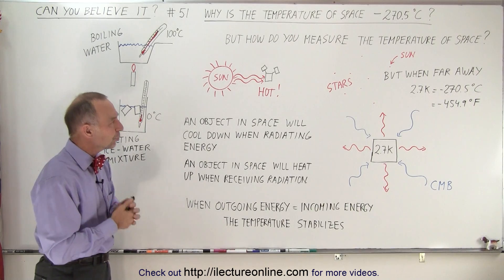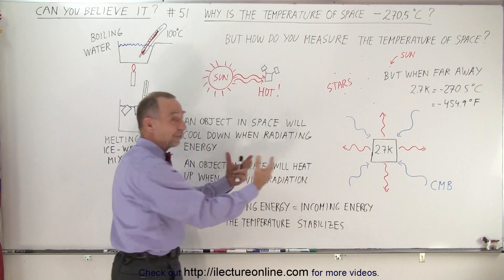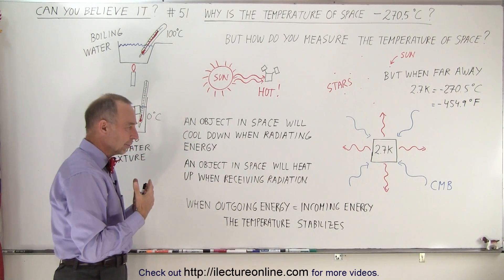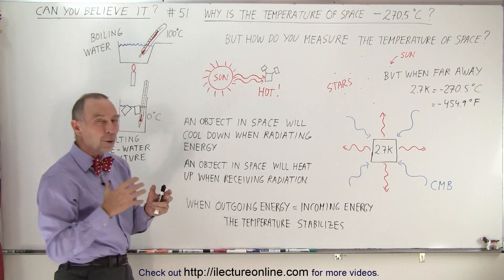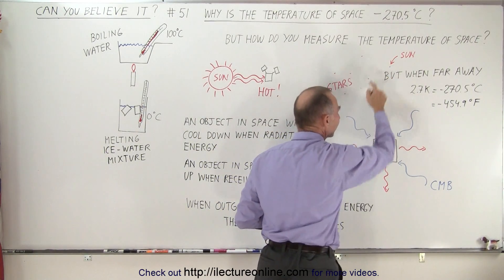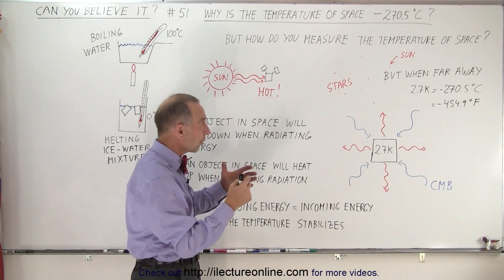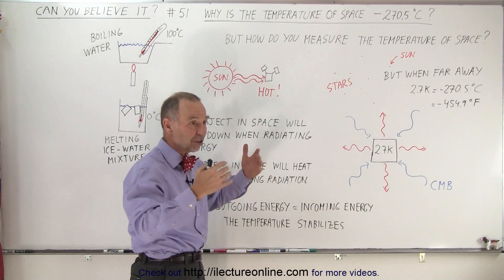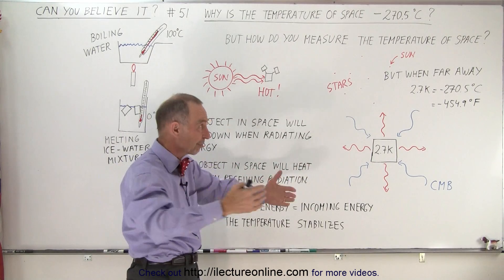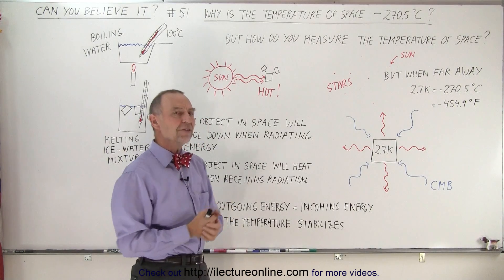We do know that if we get close to the sun or any star it will feel hot because we get the radiation from the sun. But if we go really far away where the sun is just a tiny little dot in the sky, just like another star, we're so far away from the sun and any other star that we simply do not feel the heat radiation from those stars — virtually zero. Then what would be the temperature?